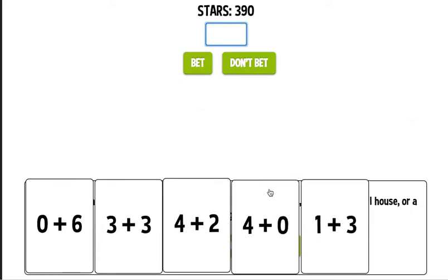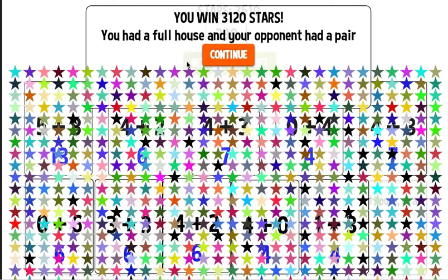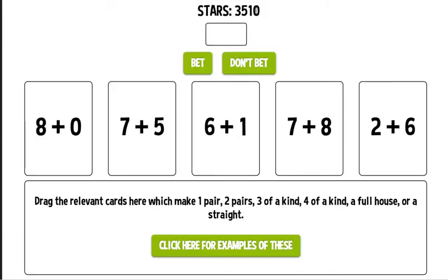So I've never actually gotten this kind of hand before in testing this game. So I'm gonna bet all of it. This is gonna be a big win for me. And click bet. And I win 3,120 stars because I had a full house and my opponent had a pair. The full house rewards you with the most stars in the whole game. So right like that I have 3,510 stars.